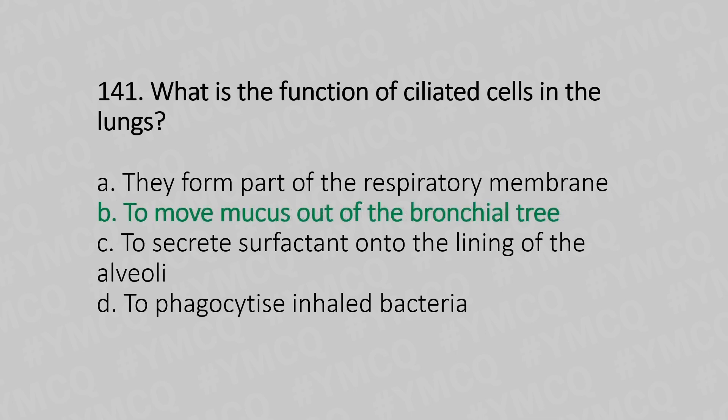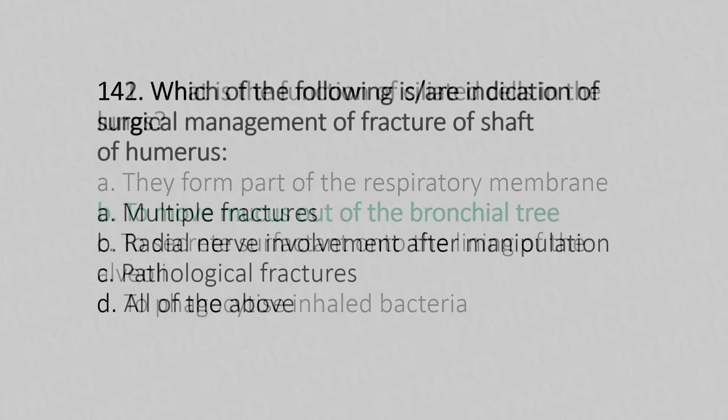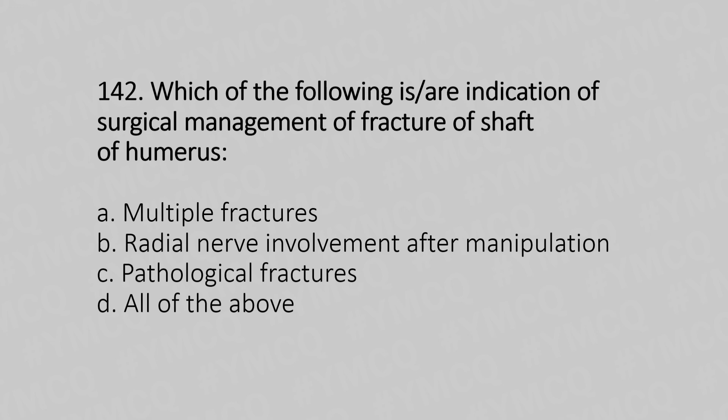Option B: to move the mucus out of the bronchial tree. Now let's move to question number 142. Which of the following is the indication of surgical management of the fracture of the shaft of humerus? Option A: multiple fracture. Option B: radial nerve involvement after manipulation. Option C: pathological fracture. Option D: all of the above. And the answer is...